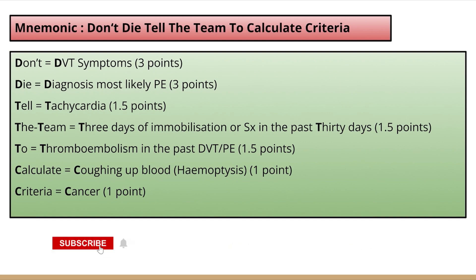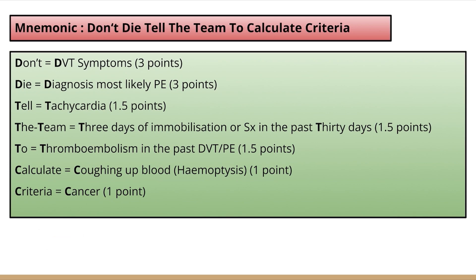In the mnemonic: 'Don't' is DVT symptoms — any pain or swelling. 'Die' is diagnosis most likely to be pulmonary embolism. Both get a score of 3. 'Tell' is tachycardia. 'The Team' is three days of immobilization or surgery in the past 30 days (around four weeks). 'To' is thromboembolism in the past — past history of DVT or PE. 'Calculate' is coughing up blood, that is hemoptysis. 'Criteria' is cancer/malignancy.